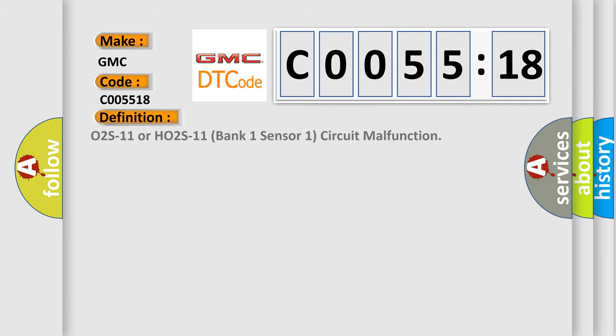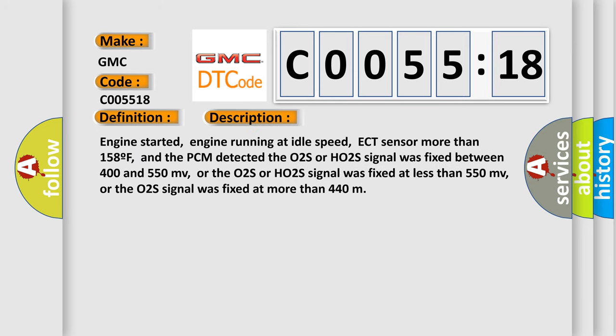The basic definition is O2S11 or HO2S11 Bank 1 Sensor 1 Circuit Malfunction. Engine started, engine running at idle speed, ECT sensor more than 158F, and the PCM detected the O2S or HO2S signal was fixed between 400 and 550 MV, or the O2S or HO2S signal was fixed at less than 550 MV, or the O2S signal was fixed at more than 440.